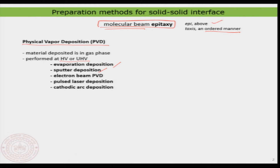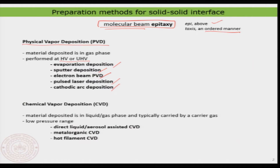You have already seen in the previous class what sputtering means, and we can use that same technology to deposit materials on top of another material. You also have electron beam physical vapor deposition, pulsed laser deposition, cathodic arc deposition, and many other different types of methods. Today I will explain in detail the evaporation deposition, the sputter deposition, and the e-beam deposition. Before that, let us also look at the other major methodology: chemical vapor deposition.